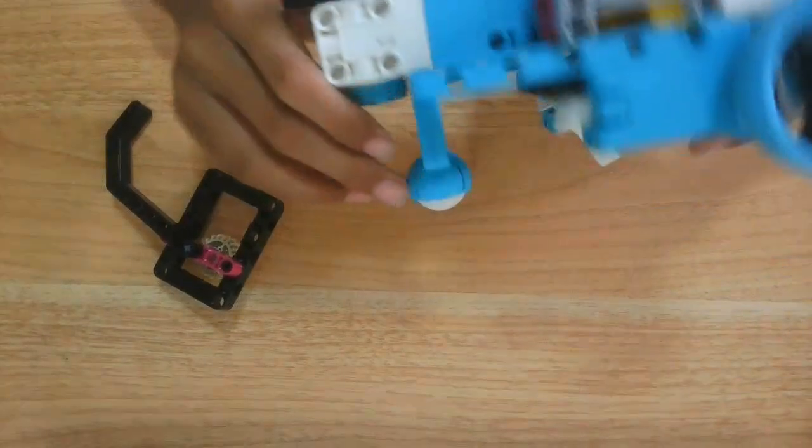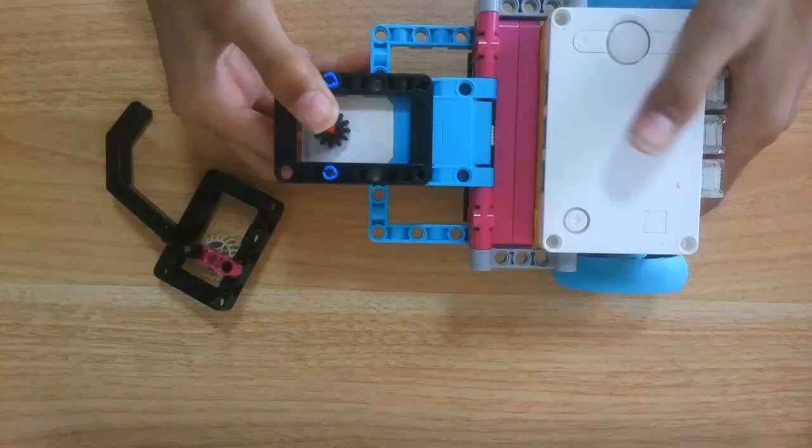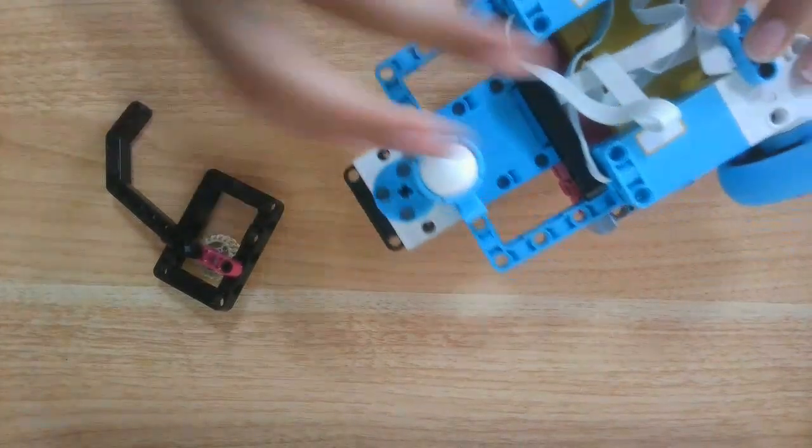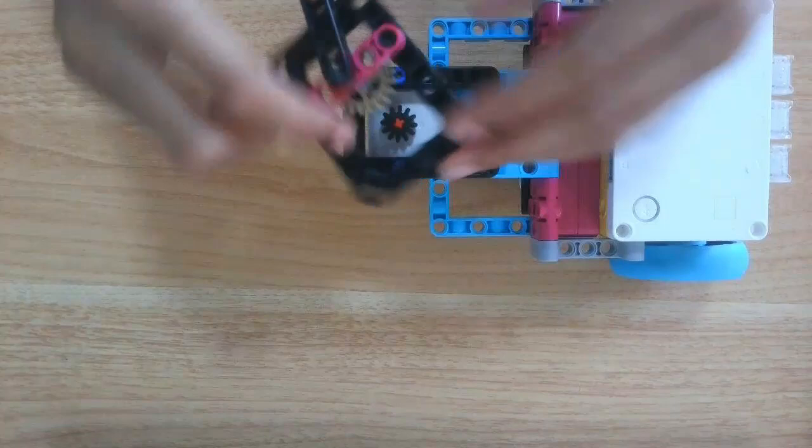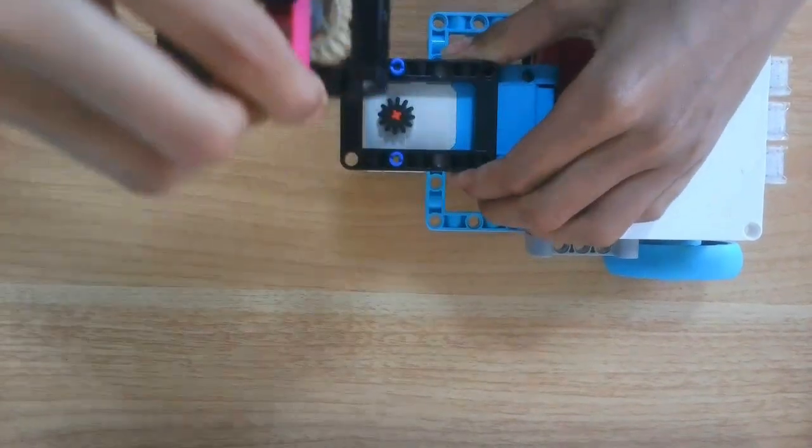The robot is built using the Spike Prime kit and uses three motors: two for driving and one for attachments. It has an attachment system which you can modify in any way possible and easily put on and take off.